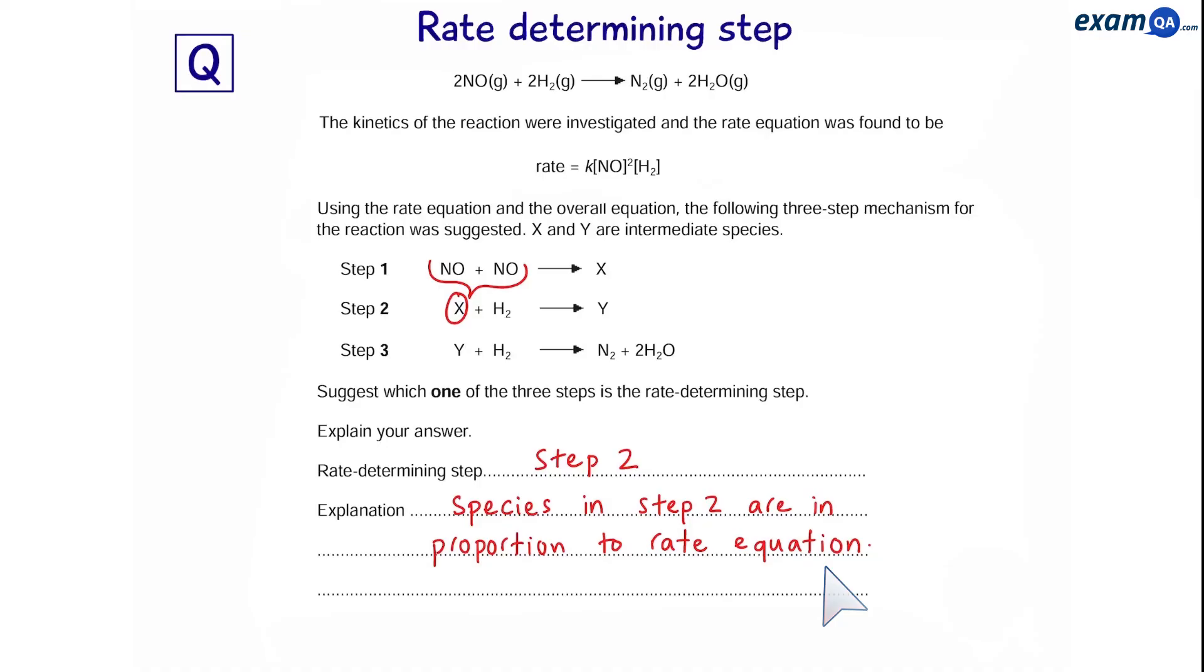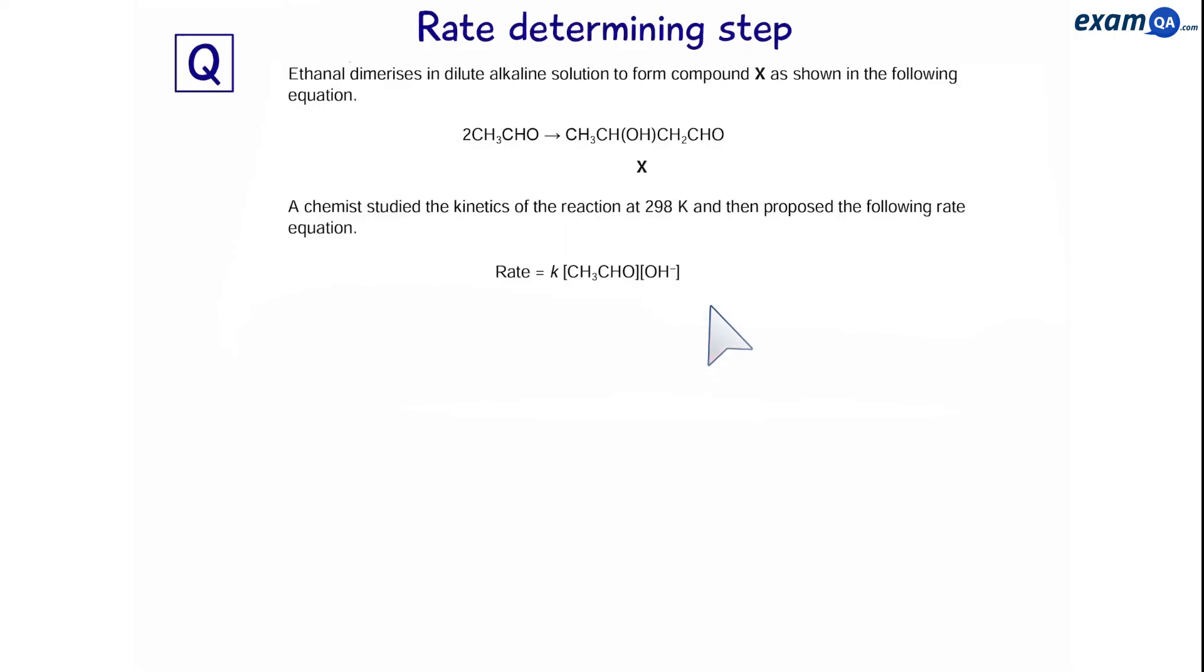Okay, let's do some more example questions. Here's another example question. Ethanol dimerises in dilute alkaline solution to form compound X as shown in the following equation. So, we can see that we have two molecules of ethanol which react with each other to form compound X. The reaction is happening in a dilute alkaline solution. So, we can see that hydroxide ions are acting as a catalyst. So, from this we learn that catalysts can also appear in the rate equation.